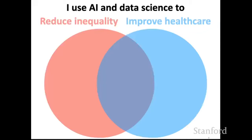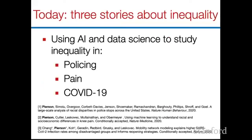At a high level, as Percy said, I use AI and data science for very practical applications. The specific applications I focus on are reducing inequality and improving healthcare. Today I'm going to be talking about using AI to study inequality in three areas: first, policing; then inequality in pain; and finally, inequality in COVID-19.